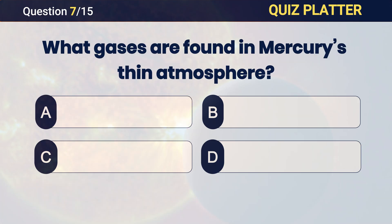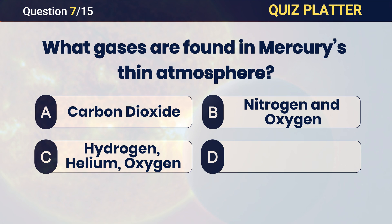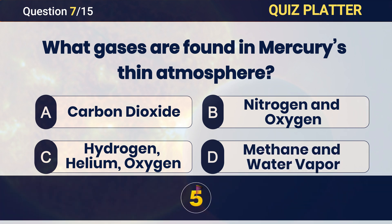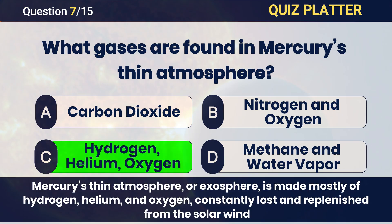What gases are found in Mercury's thin atmosphere? Answer: C — hydrogen, helium, and oxygen.